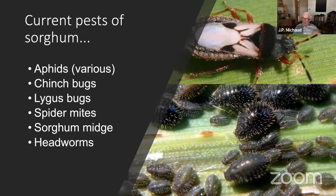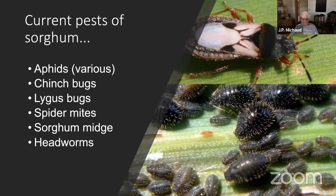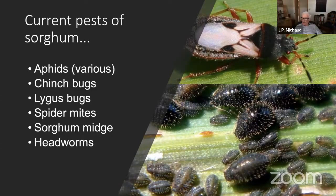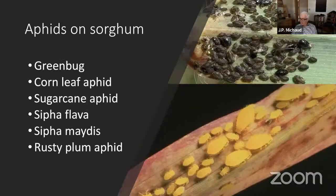These are the pests I'm going to talk about today. We've had some new aphids show up in sorghum in addition to sugarcane aphid; fortunately none appear to be very abundant, so hopefully they won't be new problems. I haven't talked about spider mites for quite a while, but if we return to cycles of hot, dry summer weather, these could become important again. Chinch bugs and sorghum midge are both pests whose geographic range and behavior in the crop have been gradually changing, and midge in particular may be a pest we need to pay more attention to going forward, especially with increasing climate change.